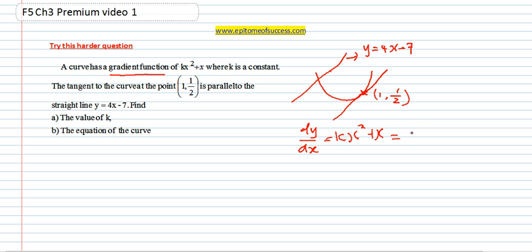So you know that kx squared plus x is equal to 4. You see, this is y equals mx plus c. The m is the gradient of this line, which is also the gradient of the tangent.